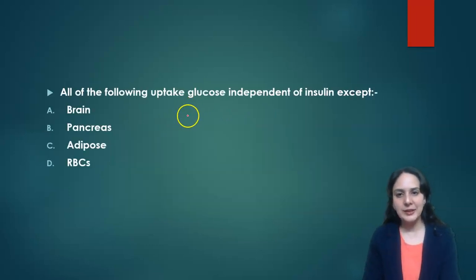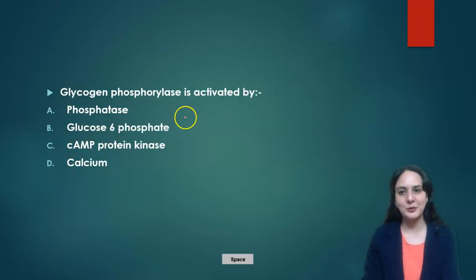Next is: all of the following use insulin-dependent glucose uptake except? We know which organs are dependent on insulin for glucose uptake: they are adipose tissue, skeletal muscle and cardiac muscles. So here brain, pancreas and RBCs are not the answer, and adipose tissue is the correct answer. This was very easy and straightforward question.